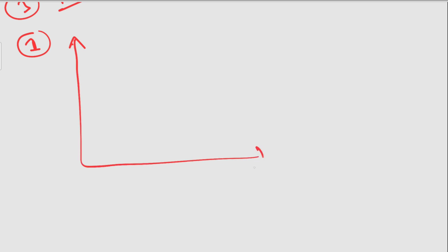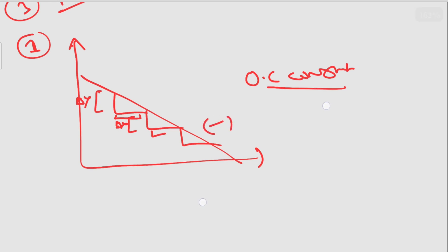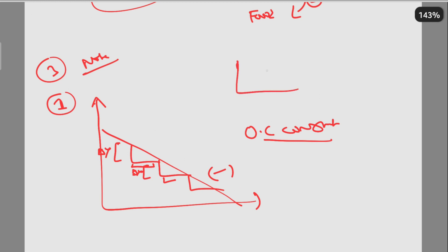Now there are three things to note about the production possibility curve. First, the curve can be a straight line. This suggests that opportunity cost is constant — meaning you are giving up the same quantity of Y when producing each additional unit of X.